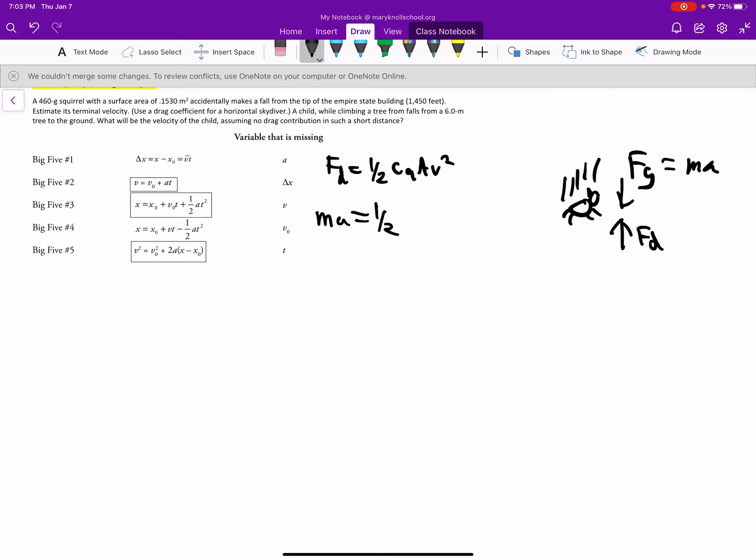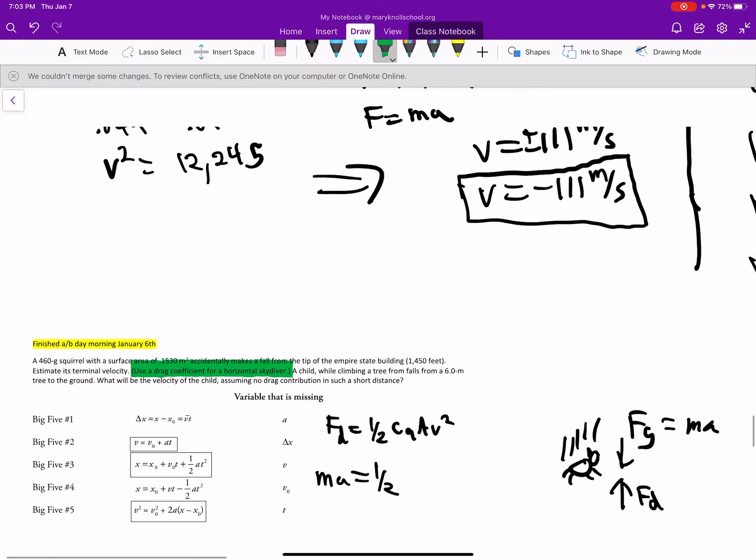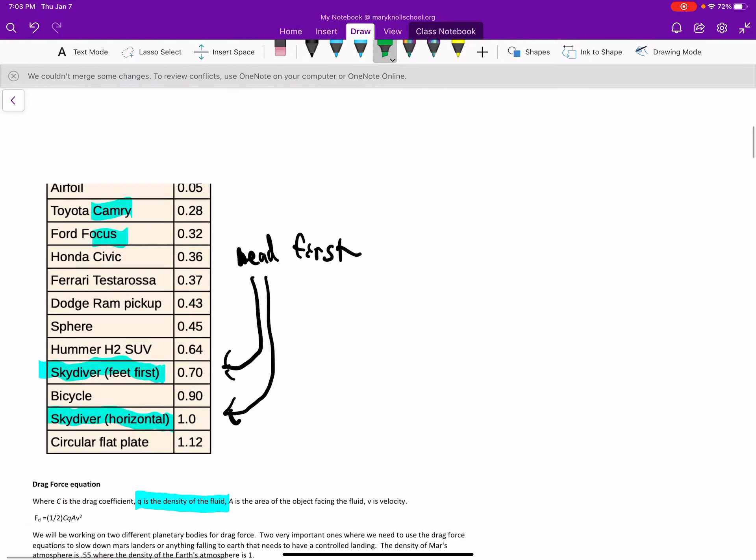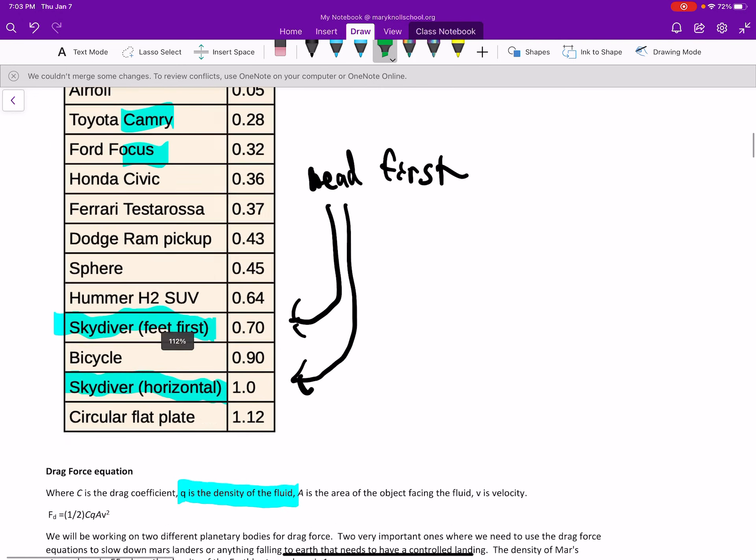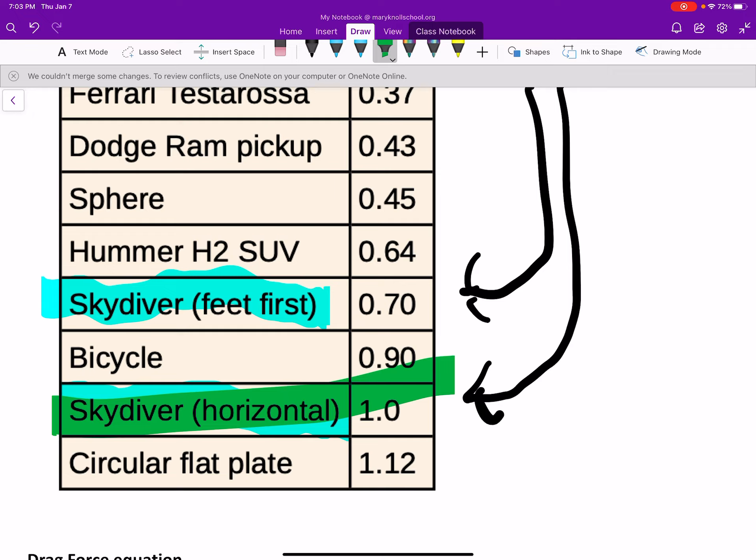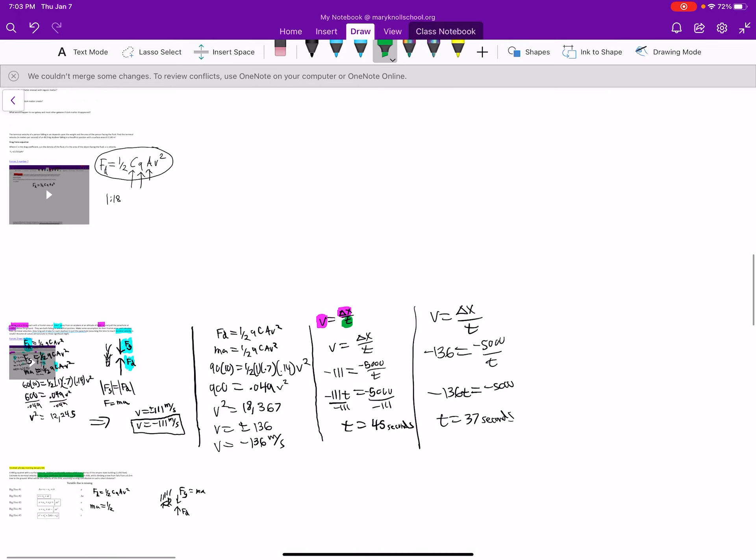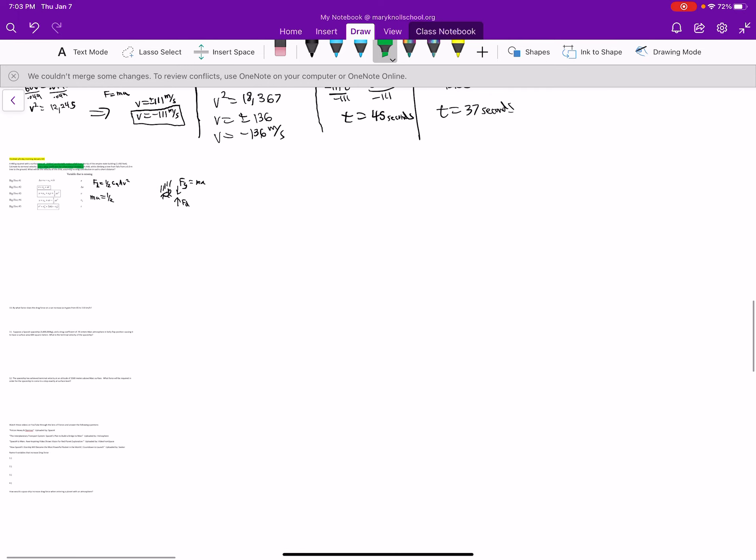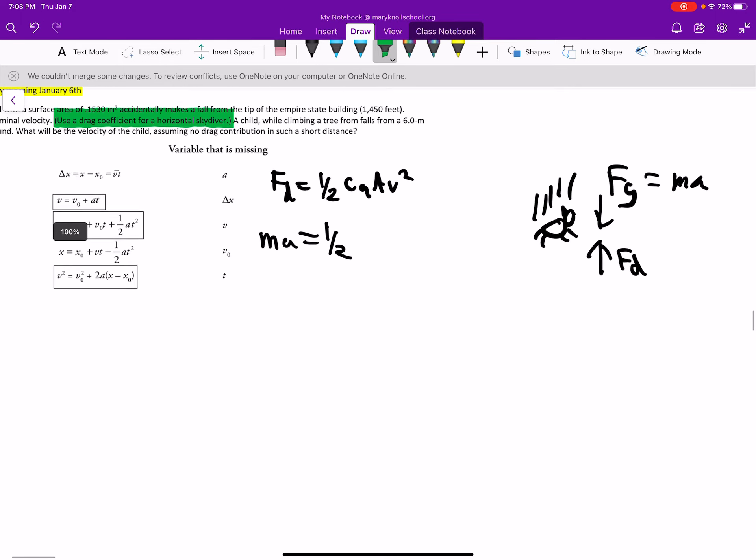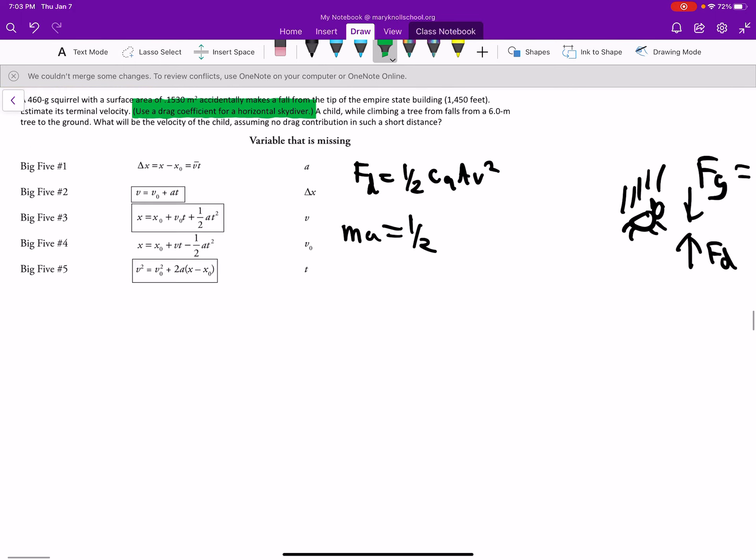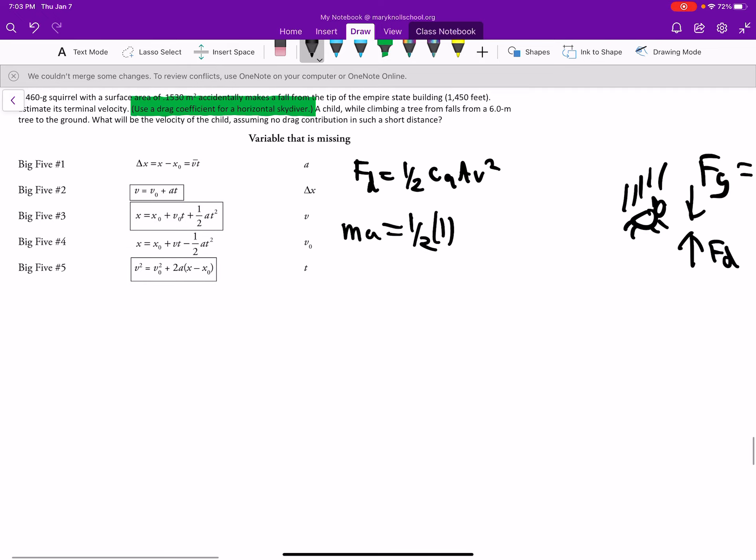One half. Now, what is that c value? The c value is, well, let's look it up. It says right here, use the drag coefficient for horizontal skydiver. So let's look at the horizontal skydiver. Right here. So that's going to be 1. Okay, so that's going to be 1. And then ρ, we're on Earth, so that's also going to be 1.